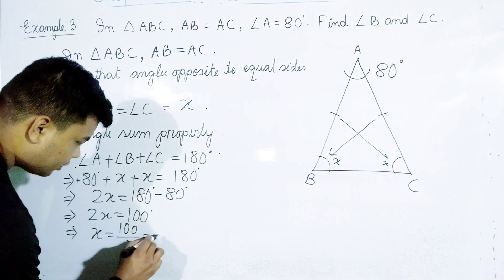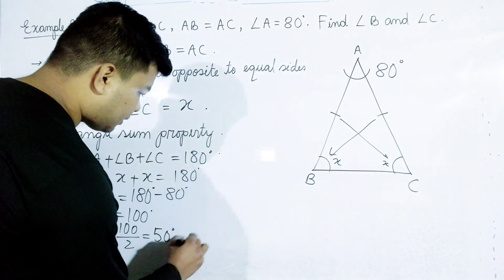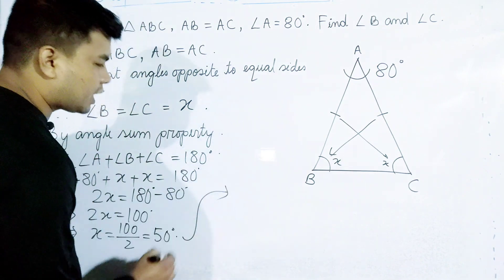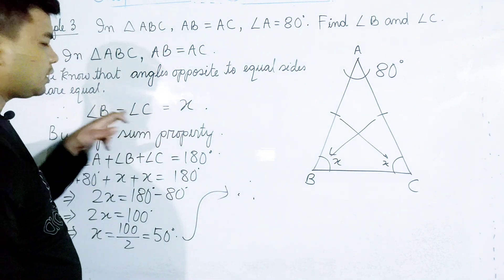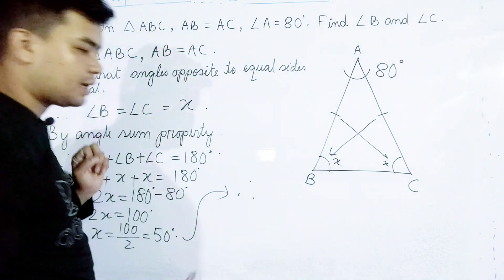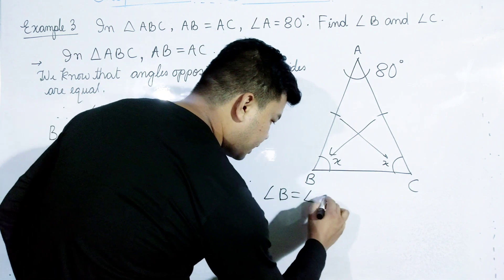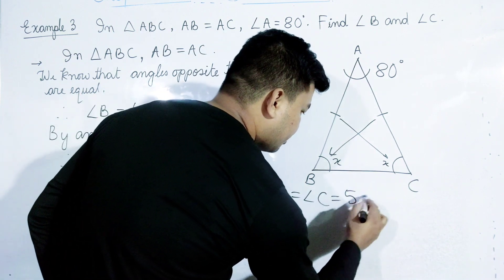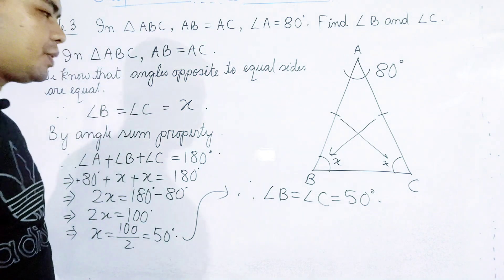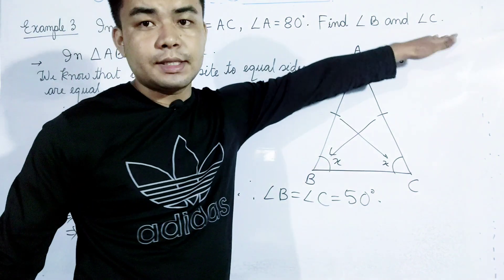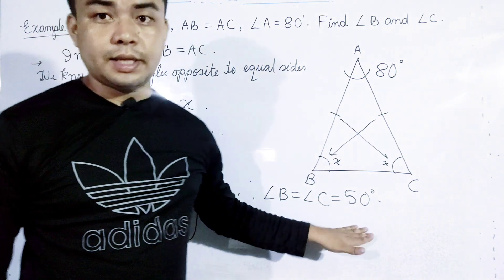100 divided by 2 is equal to 50 degrees. Therefore, x is equal to angle B equal to angle C. So angle B equals angle C, which equals 50 degrees. Therefore x is equal to 50 degrees.